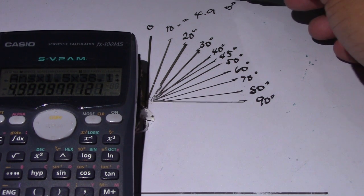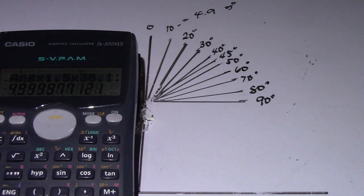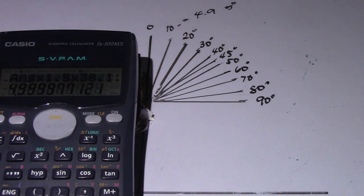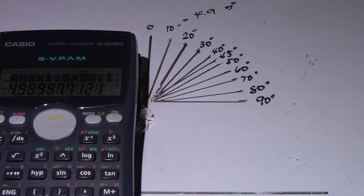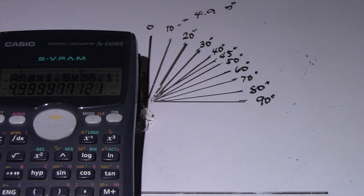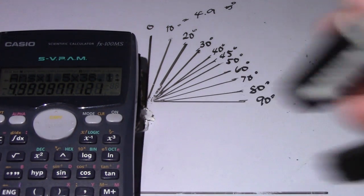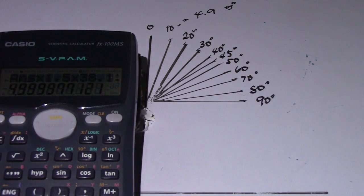So that's how to compute for any angle. You can use this same formula — for example, if you have 30 degrees, you can use the same formula and compute the total spool you are using.